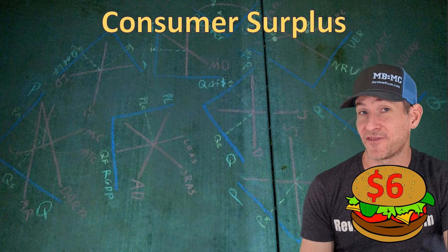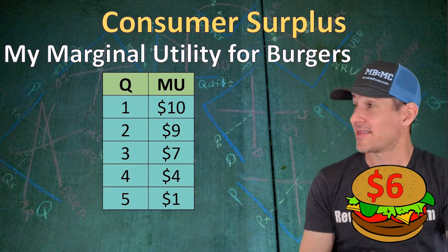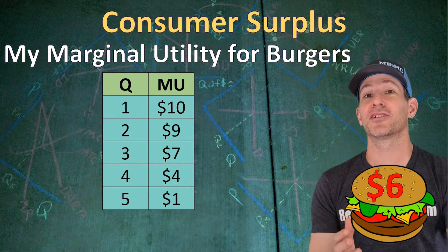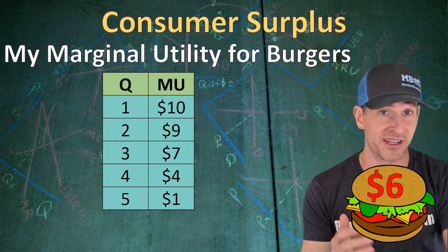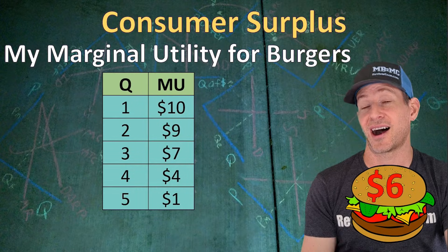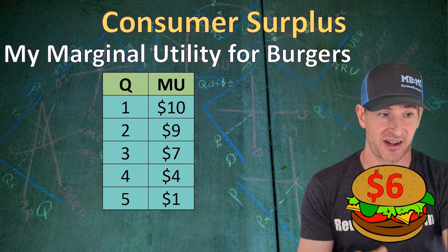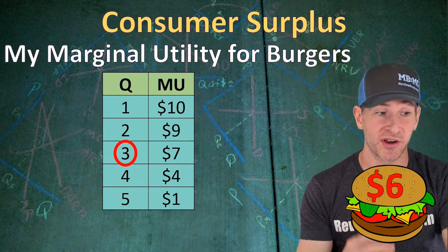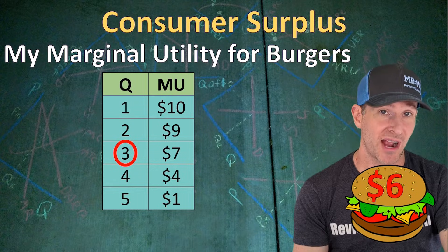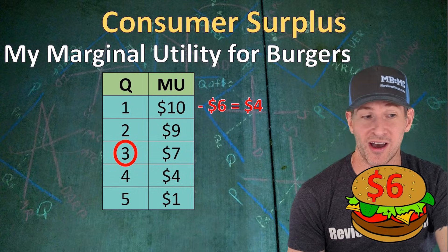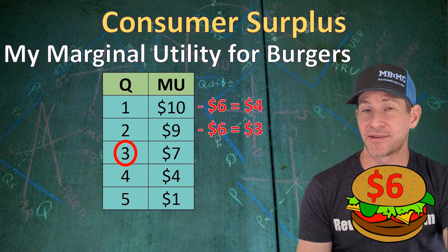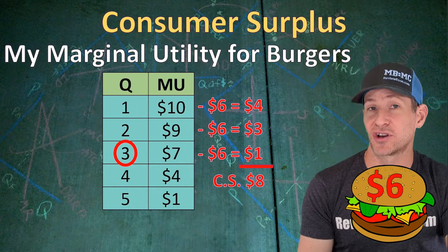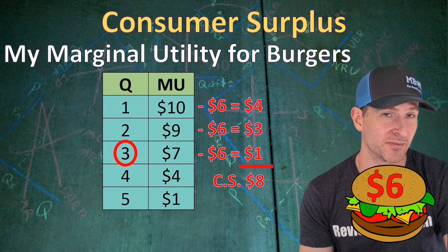If I was thinking of buying multiple cheeseburgers, we might find the marginal utility for each one. That first cheeseburger has a marginal utility of $10, but my fifth cheeseburger has a marginal utility of just $1. People will continue to consume as long as the marginal benefit — in this case the marginal utility — is greater than or equal to the marginal cost, which here is the price of $6. So my utility-maximizing number of cheeseburgers is 3. To find my consumer surplus, I take the marginal utility for each and subtract the price: the first has $4, the second $3, and the third $1 of consumer surplus, totaling $8.